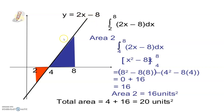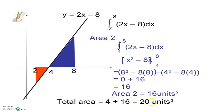y is equal to 2x minus 8 is the equation of the straight line given. With ordinates, the lower limit is 2 and upper limit is 8: integral of 2x minus 8 dx. We consider lower limit 4 and upper limit 8, defining two portions. Integration of x is x squared upon 2; integration of 8 is x. Simplifying, 16 is the area in square units and total area is 4 plus 16, which is 20 square units.